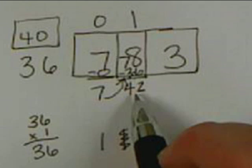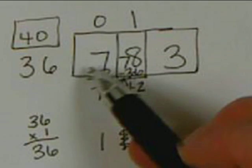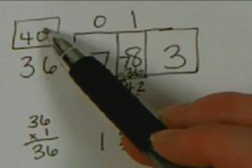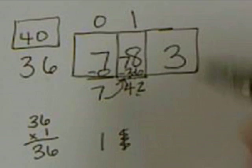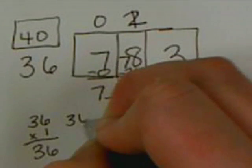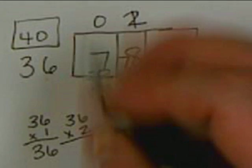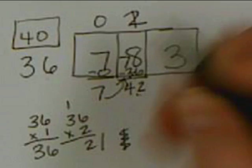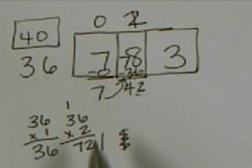1 times 36 is 36, then subtract: 8 minus 6 is 2, 7 minus 3 is 4, so 42. Now 42 is bigger than 36, so we know our estimate did not work. We need to try one more time. Over to the side they do 36 times 2: 6 times 2 is 12, 3 times 2 is 6, plus 1 is 7 — we get 72.